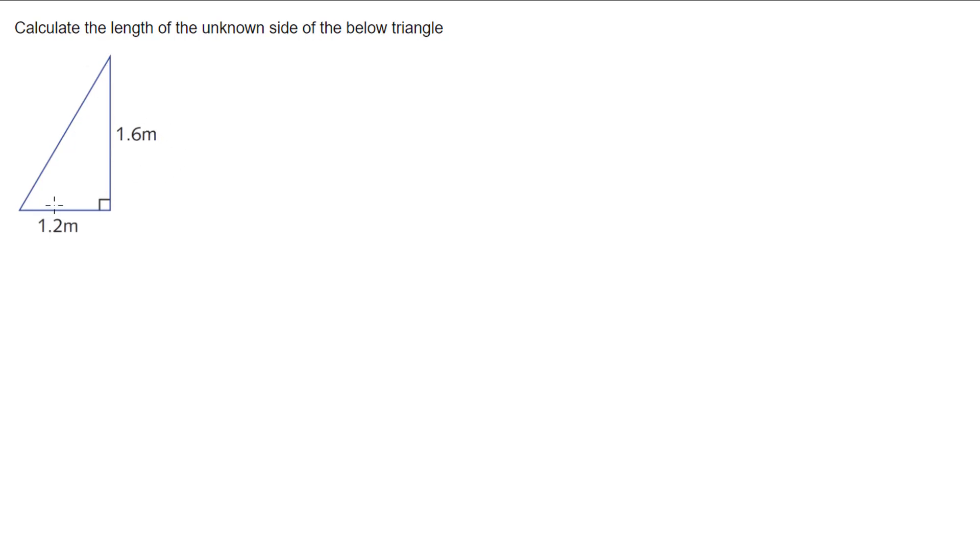So, we have a right-angled triangle and we know the two shorter sides of the right-angled triangle and we don't know the hypotenuse. Because I know two sides and I'm looking at finding the length of the hypotenuse, I'm thinking of using Pythagoras' theorem.